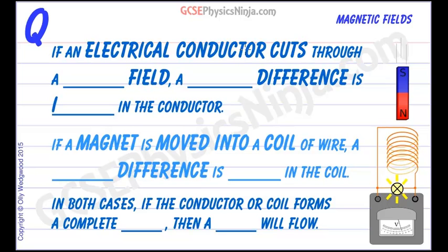If an electrical conductor, such as a wire, for example a metal wire, cuts through—and notice the word cuts—cuts through a magnetic field.